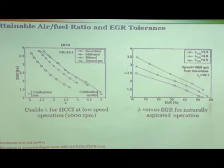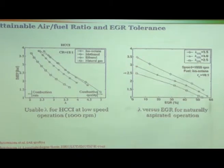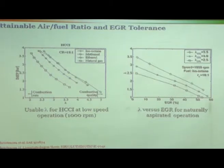The lambda versus EGR shows how much EGR you can put in for naturally aspirated operation. This engine is operating at 1000 rpm using isooctane with compression ratio 18. You can see that as you keep increasing the EGR, you can go for a richer and richer mixture — because the exhaust gas being put in retards the combustion. That is why you can go for a richer mixture: if you want to make mixtures richer, you have to put in more and more EGR into the system.